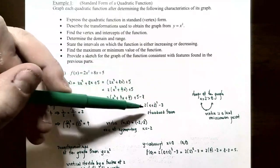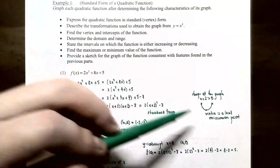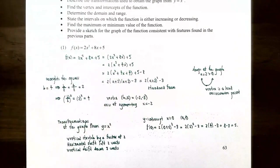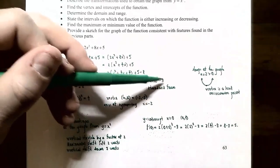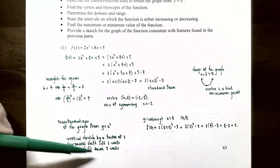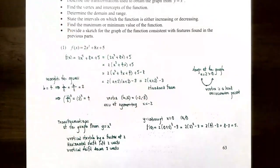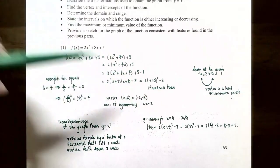The transformations from y = x² are: a = 2 gives a vertical stretch by a factor of 2; k = −3 gives a vertical shift down 3 units; and x + 2 inside the parentheses (replacing x with x + 2) gives a horizontal shift left 2 units.